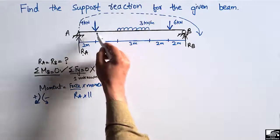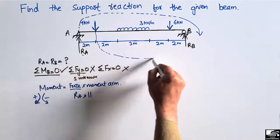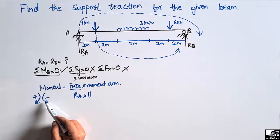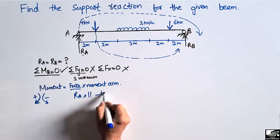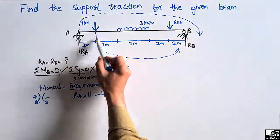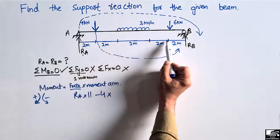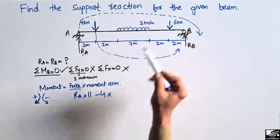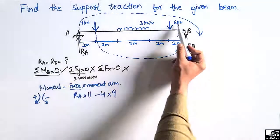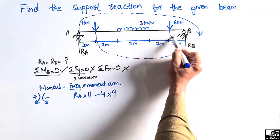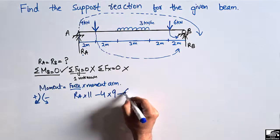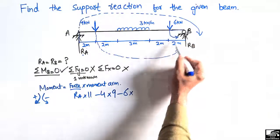The moment arm for the 4 kN load is 2 + 3 + 2 + 2 = 9 meters. The 6 kN load also acts downward, creating an anti-clockwise moment about B, so it is negative: minus 6 multiplied by its moment arm, which is 2 meters from the roller support.